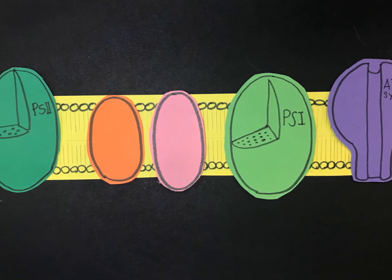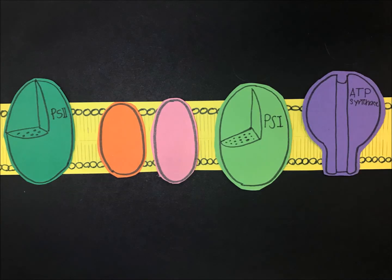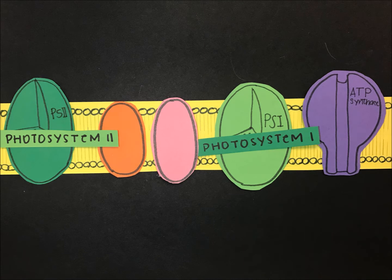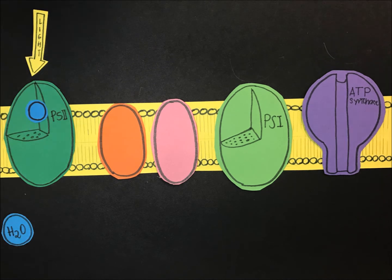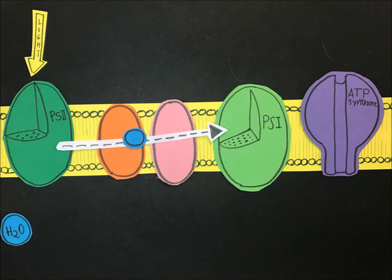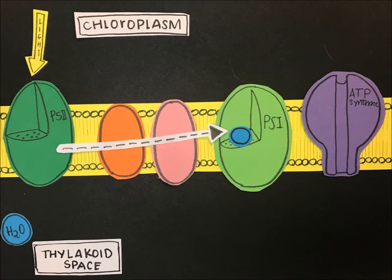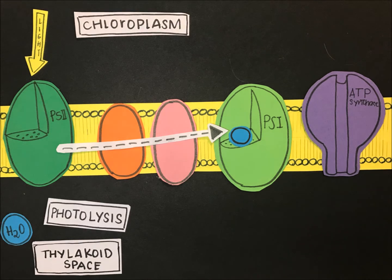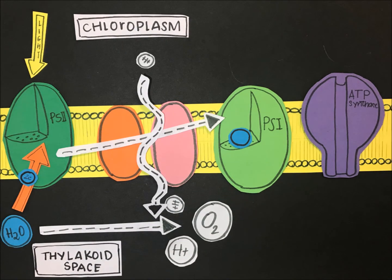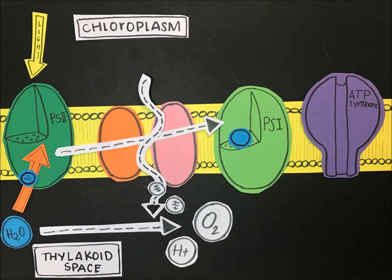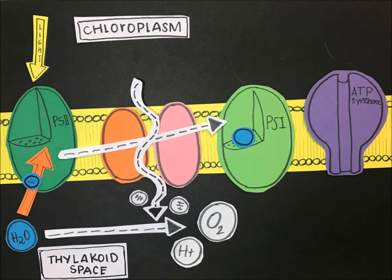Let's dig deeper into the light-dependent reactions. There are two photosystems involved: Photosystem II and Photosystem I. For Photosystem II to work, it mainly needs light and water. First, light enters the chlorophyll pigments and excites electrons, which then leave Photosystem II. At the same time, an enzyme breaks the water molecule apart in a process called photolysis, shown as: H₂O → 2 hydrogen ions + ½ O₂ + 2 electrons. Oxygen is released, and hydrogen ions begin to build up inside the thylakoid disk, while electrons from the water molecule replace the electrons that left Photosystem II.